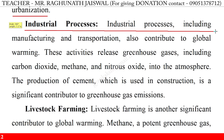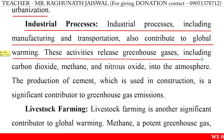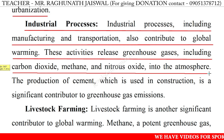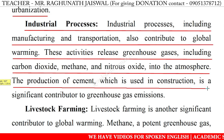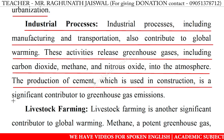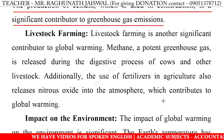Industrial processes. Industrial processes including manufacturing and transportation also contribute to global warming. These activities release greenhouse gases including carbon dioxide, methane and nitrous oxide into the atmosphere. The production of cement, which is used in construction, is a significant contributor to greenhouse gas emission.